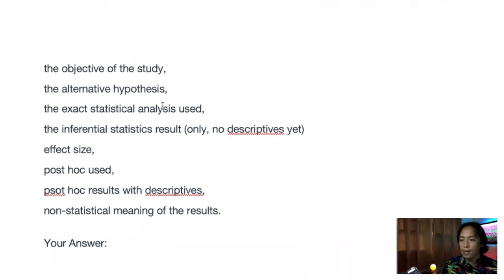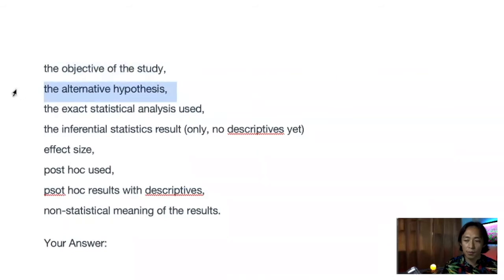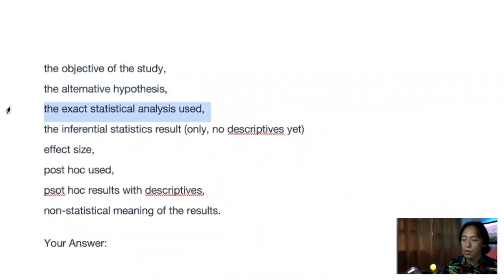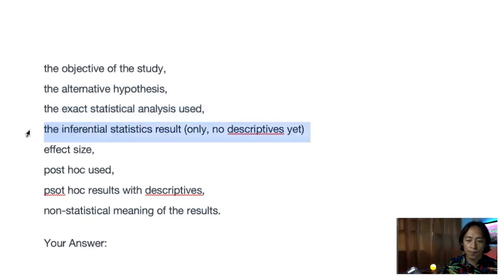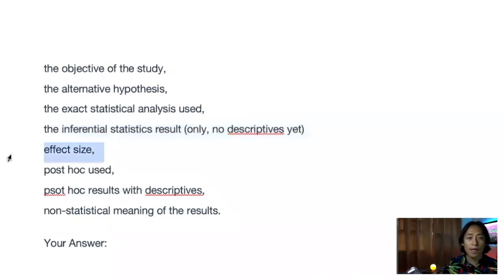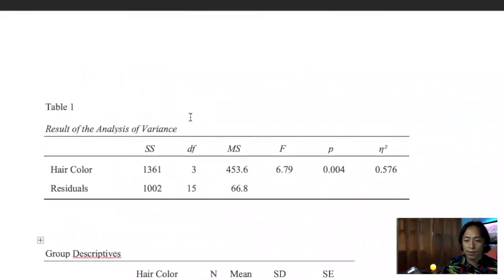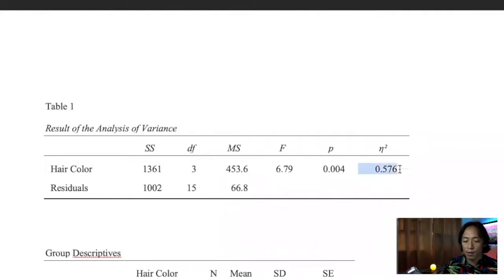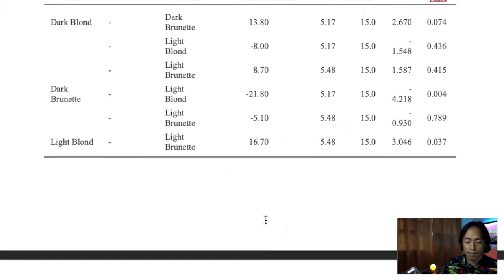We were asked to write a simple report covering several areas: a reminder of the study's objective, the alternative hypothesis — preferably directional — the exact statistical analysis used, the result of the inferential statistic, the effect size, and the post hoc results. We ran an eta squared and found it to be 0.576, which is 57.6% variance explained by the independent variable.